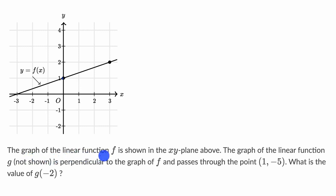We're told the graph of the linear function f is shown in the xy plane above. The graph of the linear function g, not shown, is perpendicular to the graph of f and passes through the point (1, -5). What is the value of g(-2)?